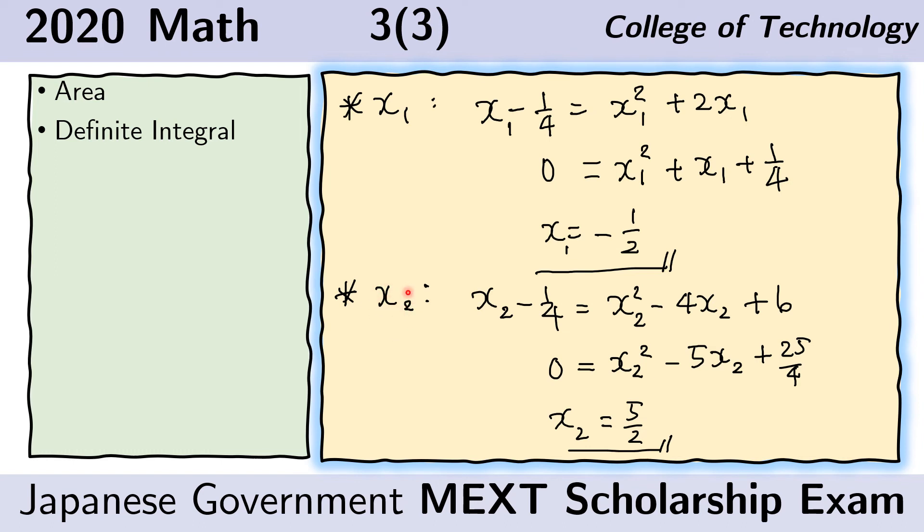For x2, we do the same thing. We equate L. This is the y of L. And this is the y of C2. Again, we solve the quadratic equation and obtain the solution.